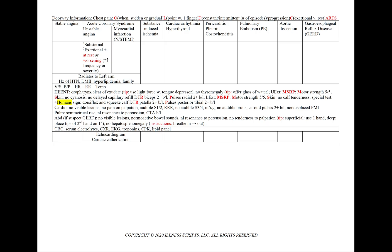Acute coronary syndrome includes both unstable angina and myocardial infarction — either non-ST elevated or ST elevation. In unstable angina, the chest pain will also be substernal and exertional, but now we could see it occurring at rest or worsening. Worsening is very important. For example, the chest pain can still be alleviated at rest, but now it is occurring more frequently or with increased severity, such as after two flights of stairs instead of the regular five.